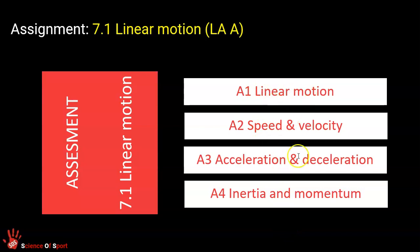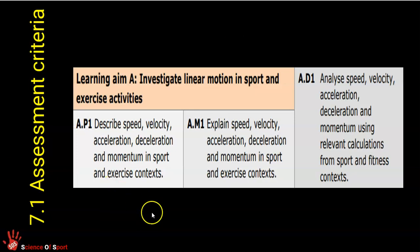Some of these you'll recognize, the top three probably, but we'll also look at something called inertia and momentum, relating it to lots of different sports examples. The assessment requirements are, as all of these biomechanics assignments are, pass, merit and distinction. So depending on the level that you're working at, you'll be describing or explaining or analyzing those components, always relating it to sporting context and examples.